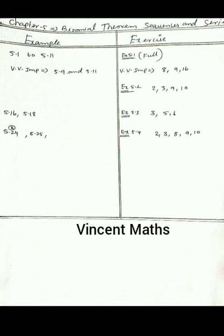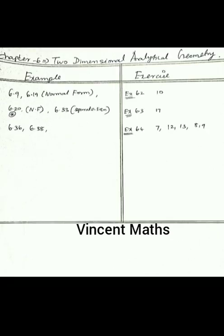We will learn the importance of the 6th chapter. I am learning the score marks for this chapter. You always focus on the 5th and 3rd. In the 6th chapter, there are 2 important examples with more chances of appearing in the exam. Example 6.9, 6.19, Example 6.20, Example 6.33, Example 6.36, Example 6.38. Example 6.2 is 10, Example 6.3 is 17, Example 6.4 is 7, Example 12, 13, 8, 9.